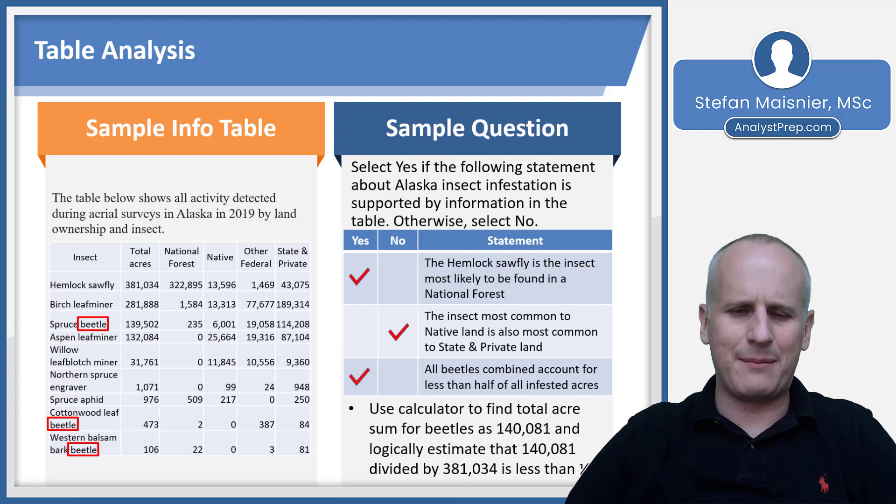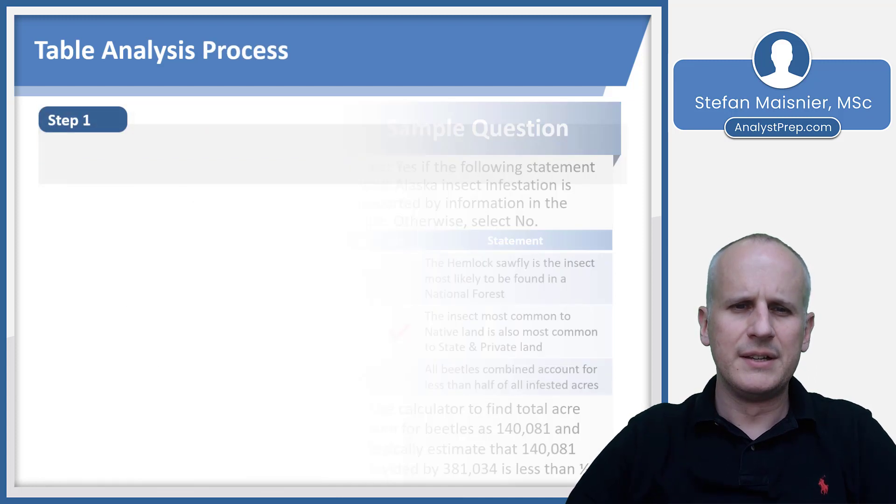And I don't even necessarily have to put that back into the calculator to see that 140 out of 381 is less than half. So that means that statement three is a yes to match the statement as presented that beetles combined account for less than half of all infested acres.